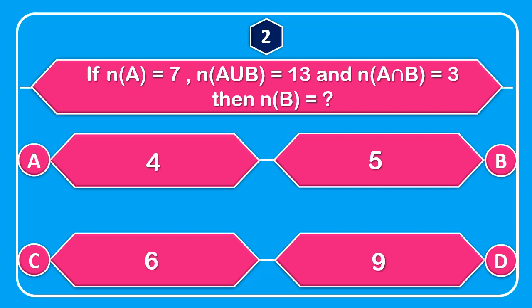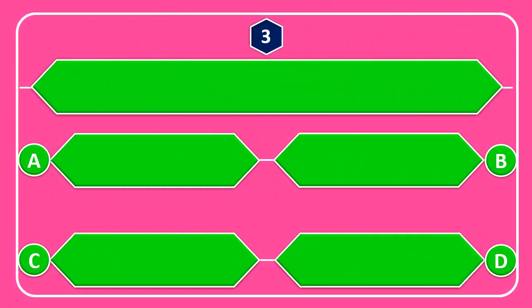Given N of A is equal to 7, N of A union B is equal to 13, and N of A intersection B is equal to 3, find N of B.